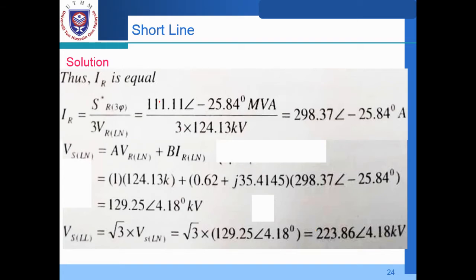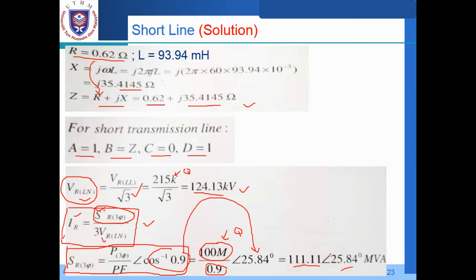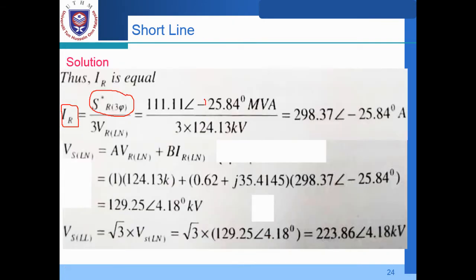After calculating SR, we conjugate it to get the value of IR. Since SR has a positive sign, we must change the sign to negative due to the conjugate operation. Dividing by 3 and multiplying by VRN equal to 124.13 kV, this gives us IR equal to 298.37 amperes at a phase angle of negative 25.84 degrees.